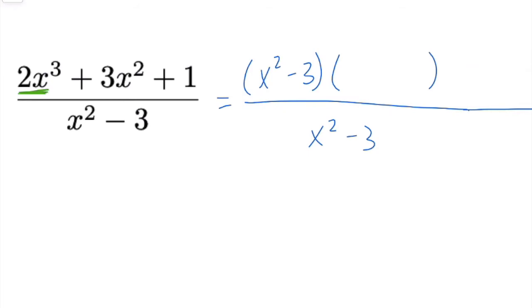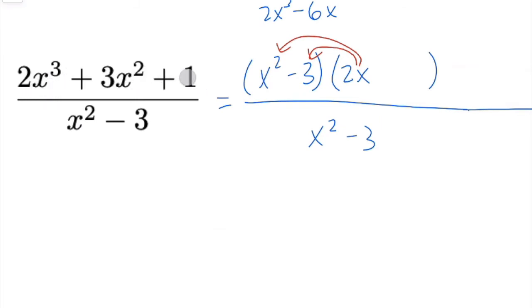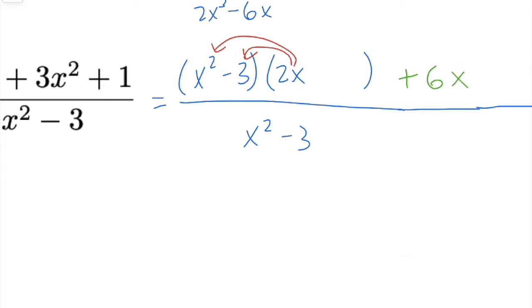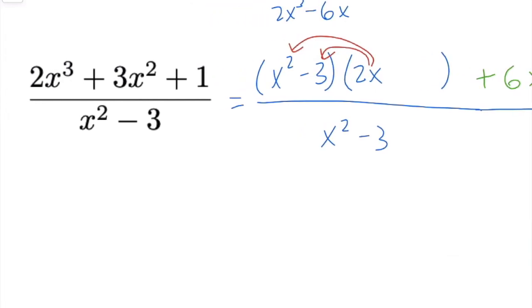I need to get 2x cubed when I multiply the first terms of the factors together, so I'll pick 2x for the first term, because 2x times x squared gives 2x cubed. Another term I'll have is 2x times negative 3, which is negative 6x. But I don't have any x terms in my original numerator, so I'm going to have to add a positive 6x off to the side to make up for that — similar to completing the square, where you force what you want and then make up the difference.